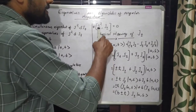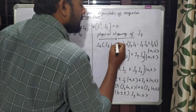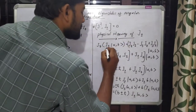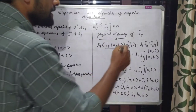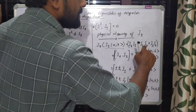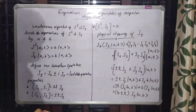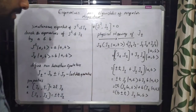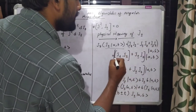To explain the physical meaning of J±, we consider J±|ab⟩. When an operator acts on a ket we get another ket, so J±|ab⟩ is itself a ket. We take Jz operating on this ket: Jz(J±|ab⟩) = (JzJ± − J±Jz)|ab⟩ + J±Jz|ab⟩, which simplifies to the commutator [Jz, J±] plus J±Jz acting on |ab⟩.